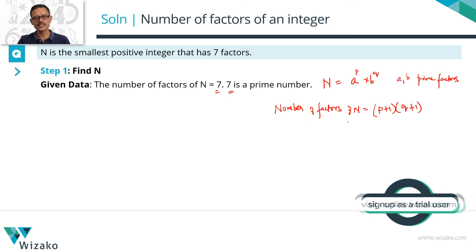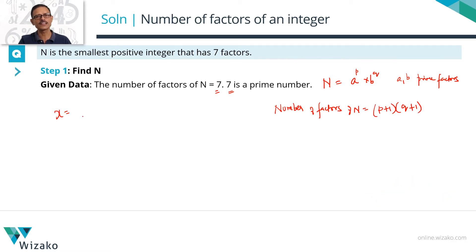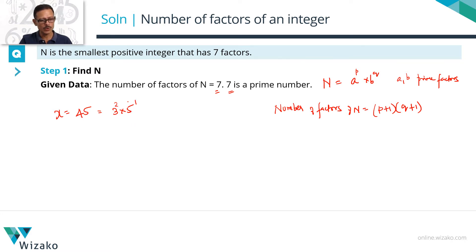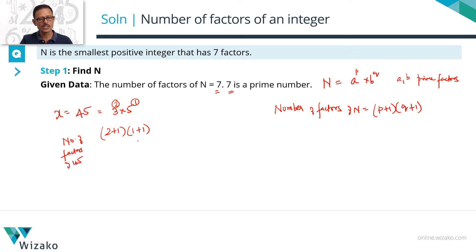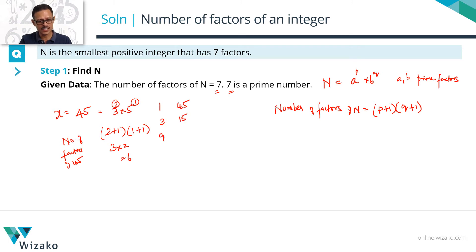Let's take a simple example. Let X equal 45. Prime factorizing 45: 45 is 9 times 5, and 9 is not prime, so it becomes 3 squared times 5. Here A to the power P times B to the power Q gives P equal to 2 and Q equal to 1. So number of factors of 45 equals (2+1) times (1+1) = 3 times 2 = 6. Validating: the factors of 45 are 1, 45, 3, 15, 9, and 5 — that's exactly 6 factors.